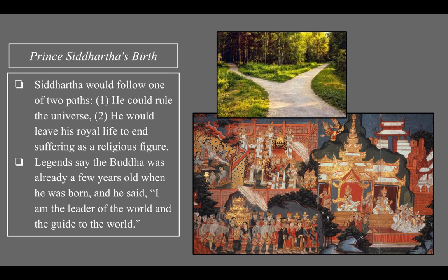The Brahmins told them that she was carrying a child who would be a great man — that would be Siddhartha. They said Siddhartha would follow one of two paths: he could either rule the universe as a king, or he would leave his royal life to end suffering as a religious figure — a truly important, enlightened figure. Some legends also say that when the Buddha was born he said, 'I am the leader of the world and the guide to the world.'